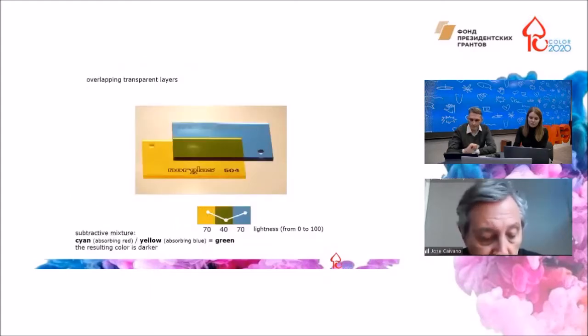When transparent layers overlap, the result is certainly a subtractive mixture. That is to say, the green color produced is darker than both yellow and cyan, as we can see in the numerical diagram below with the lightness values.